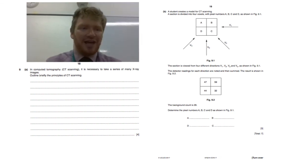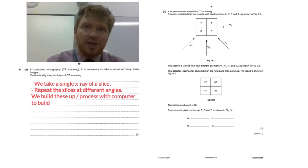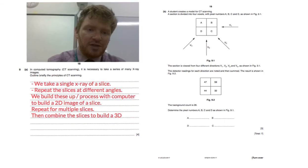Well surprise surprise, it's another outline the principles of CT question. So hopefully this is now second nature to you. How do we take a CT scan? Firstly we take a single x-ray of a slice. We then repeat the slices at different angles. We build these up and process with computers to build a 2D image of a slice. You then repeat for multiple slices and you then combine the slices to build a 3D image. Hopefully you've just got that off pat by now and you know it through and through.